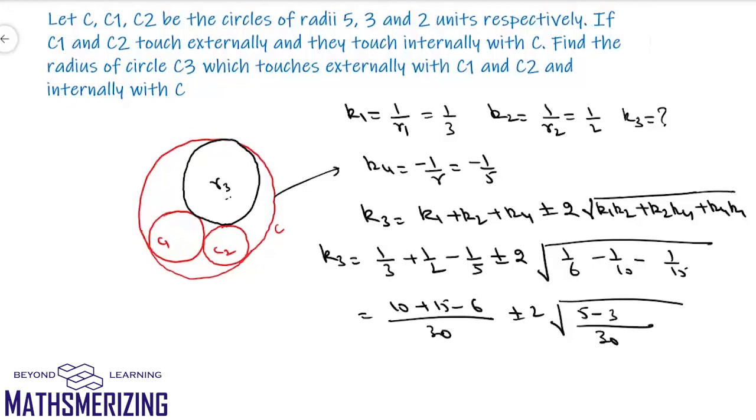5, 3, and 2. So I'll get k3 as 25 minus 6 is 19 by 30, plus minus twice under root. From here I can say the value of r3 is 30 by 19. So there is only one circle possible in this case, and the radius of the circle is given by 30 by 19 units.